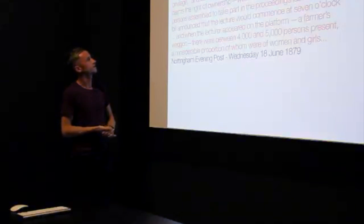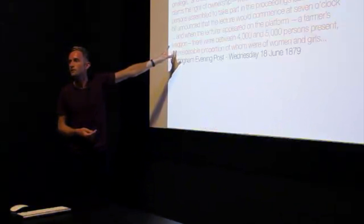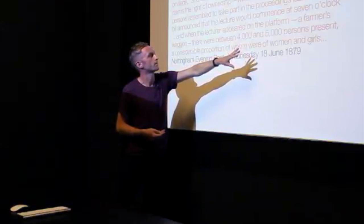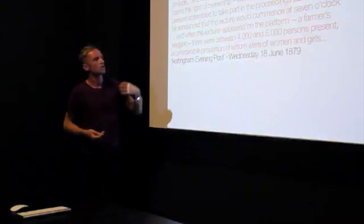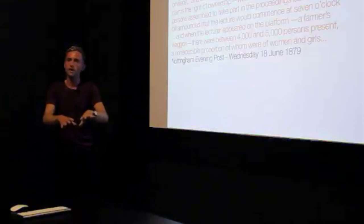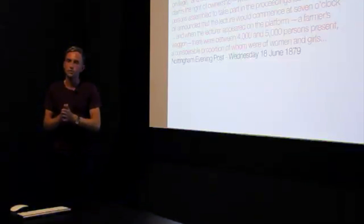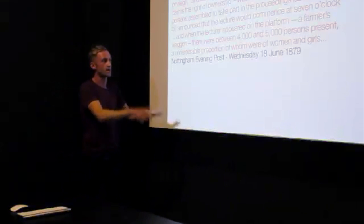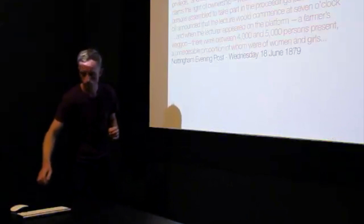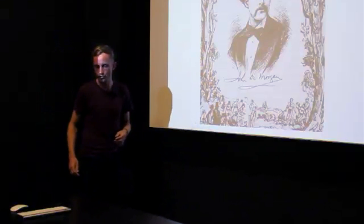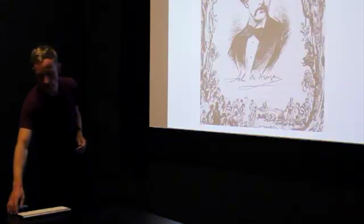Last evening, the bill announced the lecture would commence at 7 o'clock, and when the lecturer appeared on its platform, a farmer's wagon, it's almost like a Western, isn't it? It's the same era. And there were four and five thousand people present, many of whom were women and girls. And he goes on to say that John said, right, we're going to break into the bogs, we're going to cut the fence, and we're all going to go in there. But don't wreck the flowers, because if you do, we'll tell the authorities. That's what they said. And then after that, it rained. It really chucked it down. And that's how the story ends. So they broke into the bogs. This is John D. Morgan, this is what he was doing, going around the country, campaigning for the protection of common land and public parks.